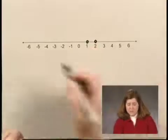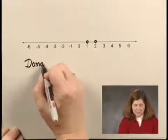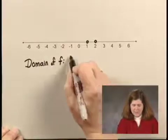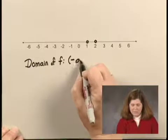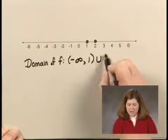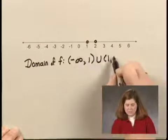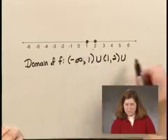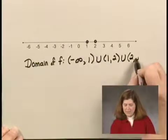So we can write the domain of f as the first interval, the union of that interval with the interval from 1 to 2, the union of those intervals with the interval from 2 to infinity.